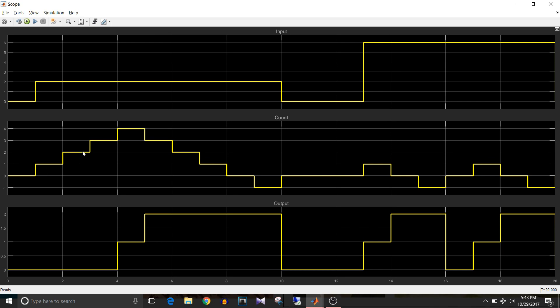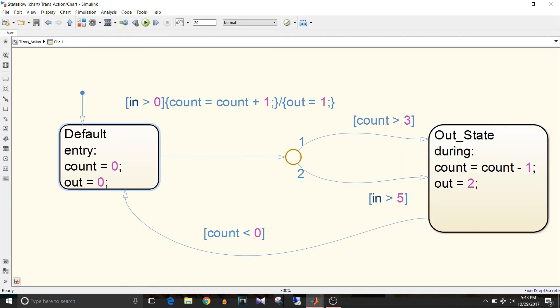So count equal to count plus 1 is executed: 1, 2, 3. Till then the output is 0. Now the count is 4, so count is greater than 3 becomes true.